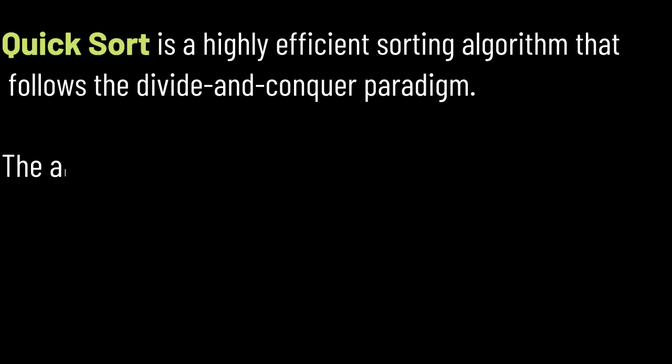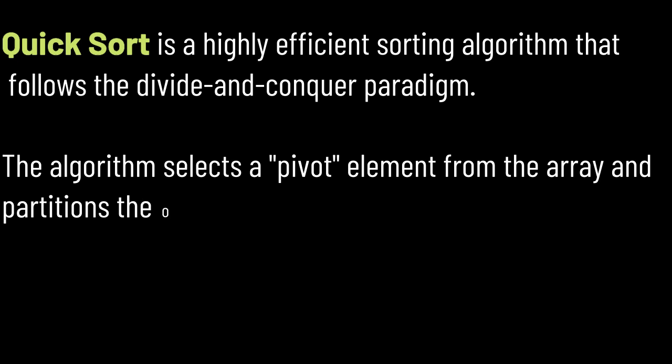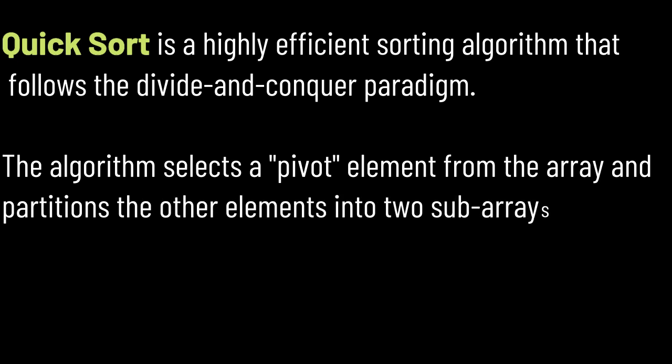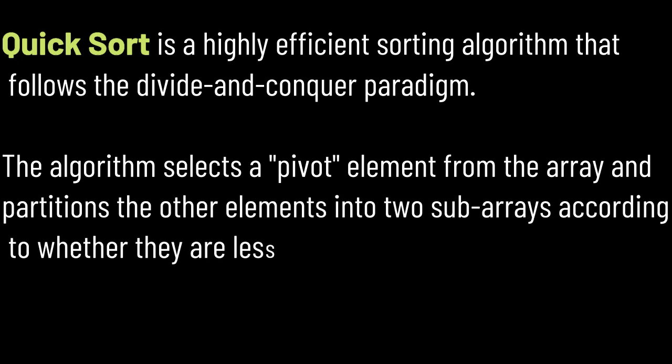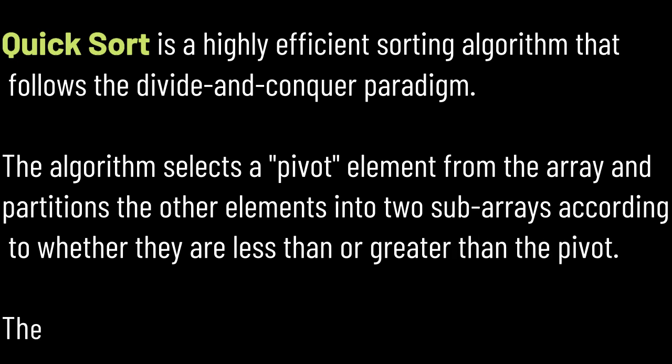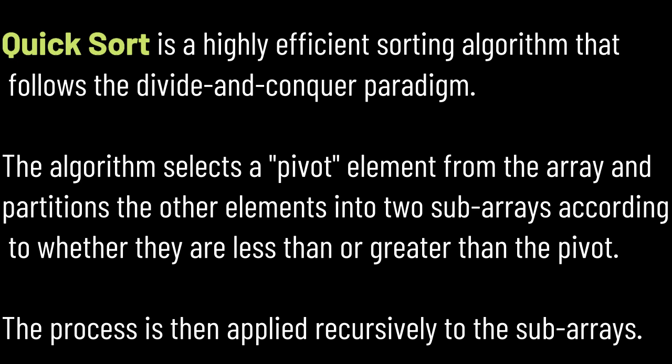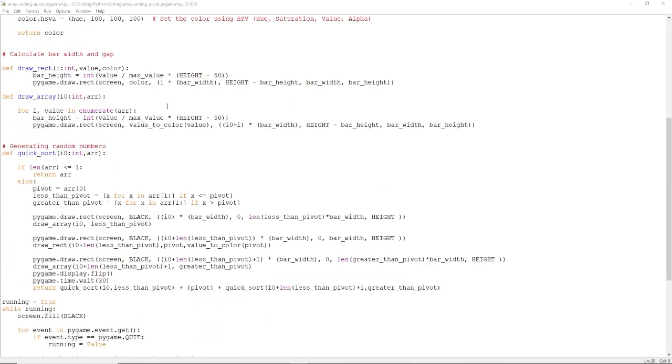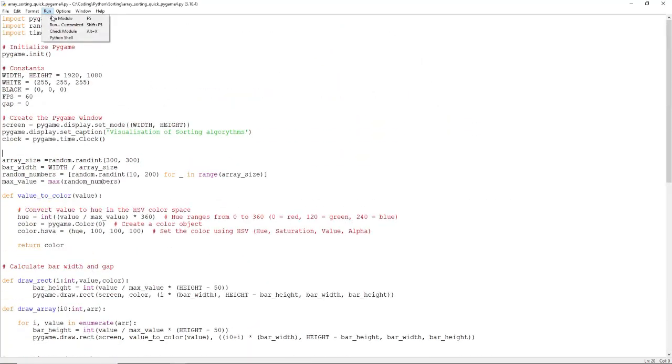Quicksort is a highly efficient sorting algorithm that follows the divide-and-conquer paradigm. The algorithm selects a pivot element from the array and partitions the other elements into two subarrays, according to whether they are less than or greater than the pivot. The process is then applied recursively to the subarrays. Here is the Python code to visualize the Quicksort algorithm.